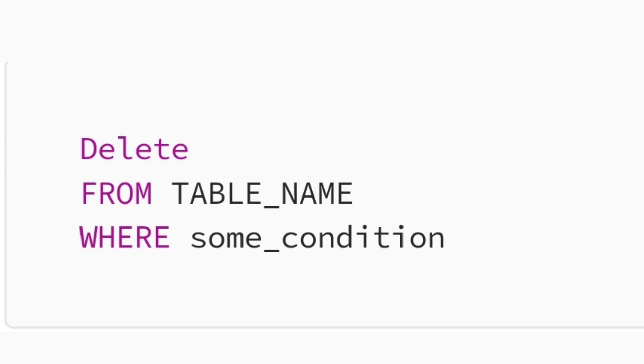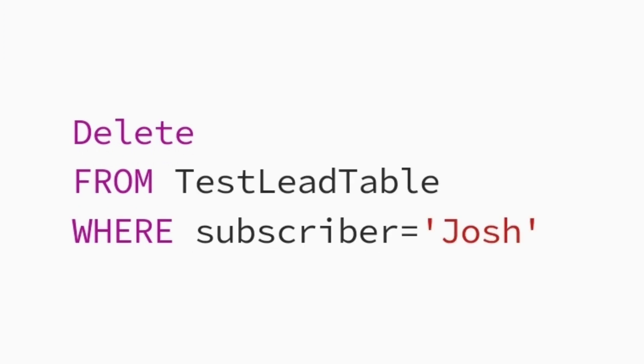Now let's say you don't want a row anymore — you want to get rid of it. The delete command. Delete allows you to get rid of a row or rows that already exists in a table. Once again, we will be using our where clause to specify which row or rows we want to delete. The syntax is: delete from table name where some condition. You replace table name with whatever table you have and some condition with criteria that fits your needs. Our example: delete from test lead table where subscriber equals Josh. Now the row or rows that had the value Josh will be removed from the table.